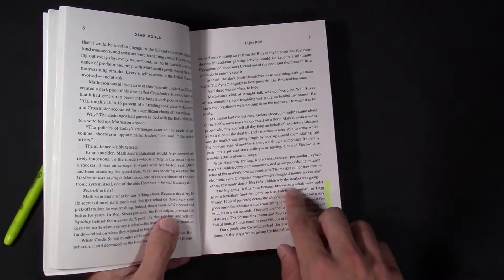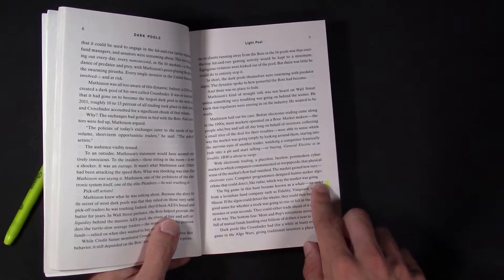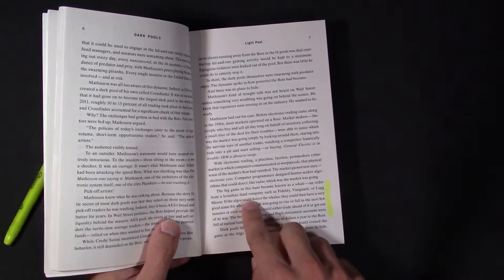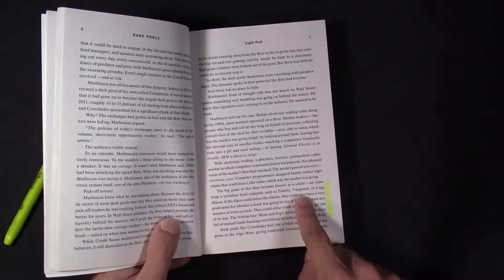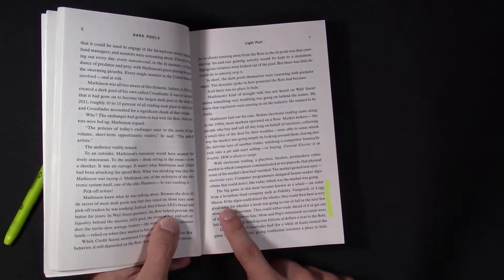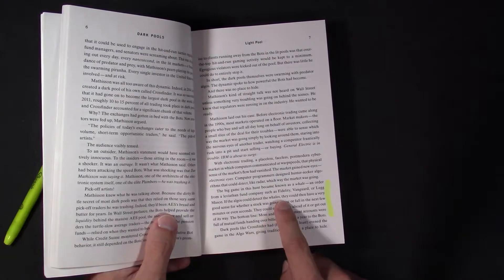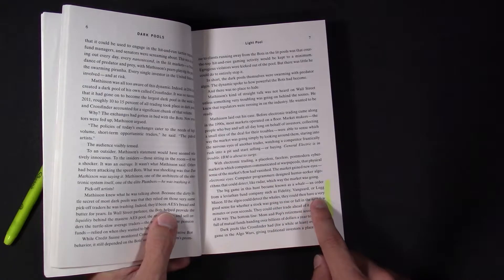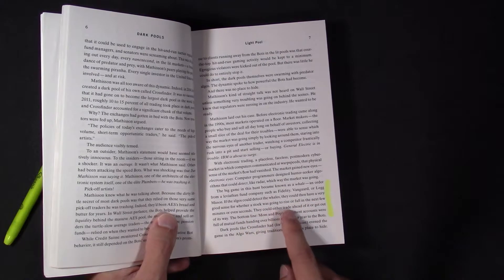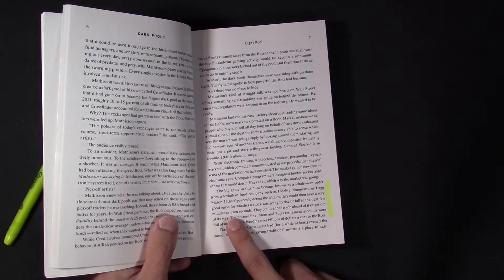The big game in this hunt became known as the whale. A whale, an order from a Leviathan fund company, such as Fidelity, Vanguard, or Legg Mason. If the algos could detect the whales, they could then have a very good sense of whether their stock was going to rise or fall in the next few minutes or seconds.